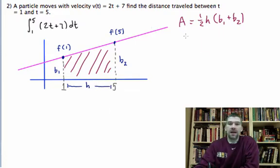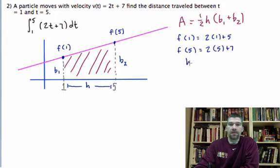So the things I need to determine are the function at 1, which is going to be 2 times 1 plus 5. The function at 5, which is going to be 2 times 5 plus 7. And the height, which is going to be 5 minus 1. And once I have all these numbers, I'll be ready to do my math. And so what have I got here? I've got 7.